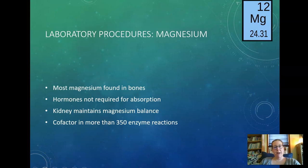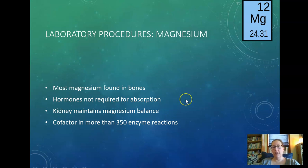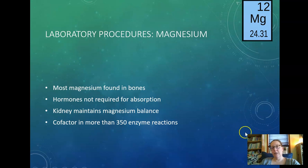Most magnesium in your body is found in bones, and hormones are not required for magnesium absorption. The kidneys maintain magnesium balance. It's a cofactor in more than 350 different enzymatic reactions. Magnesium is super important in your body and tends to live in cells and bones, with very low levels in blood — making it hard to determine status from blood levels alone. Normally you should get enough from diet.